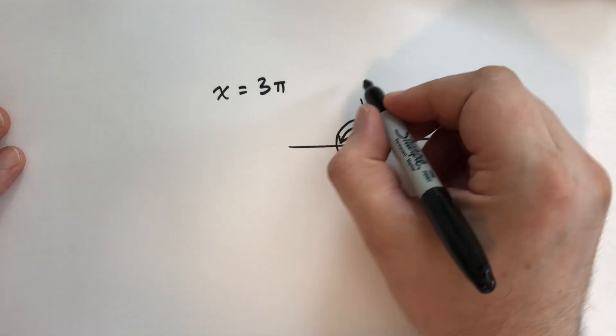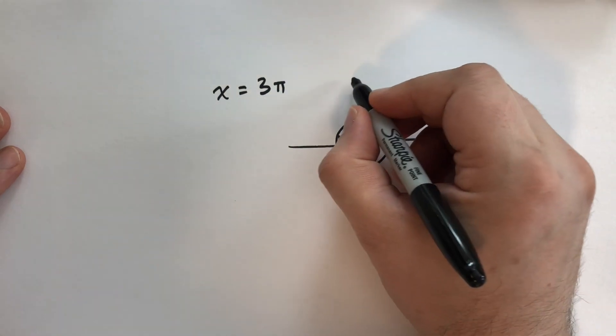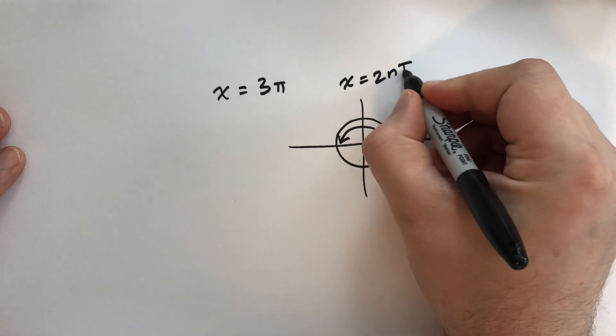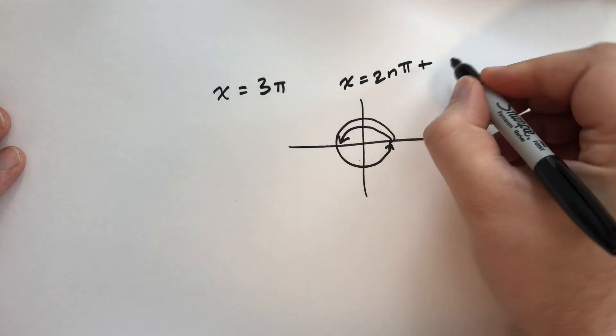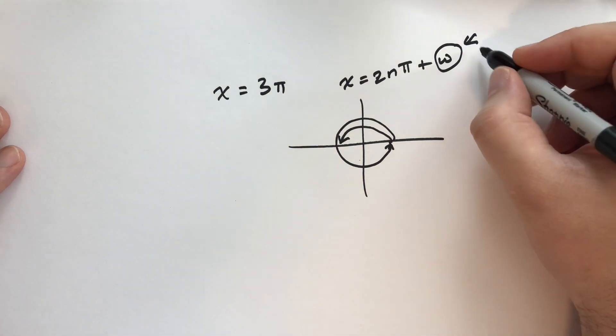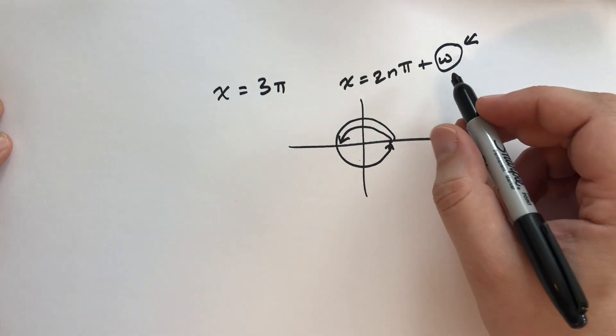And so, typically, when you see this, you can just substitute for x anything. So, you say x can be 2n times pi, 2 pi times n, plus whatever angle. And you can use this angle, which lies between 0 and 2 pi, for the angle instead.